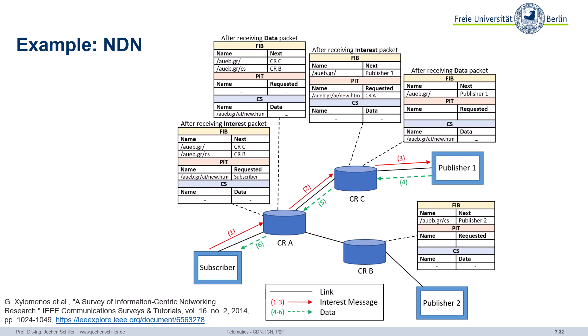You see how the interest is forwarded along the red path from the subscriber to the publisher, and then the data flows back the reverse path. This is quite nice because with this scheme, you cannot attack the subscriber. No one forwards anything if there was no request. If you just try to send some data into the network, you cannot — that's the idea.